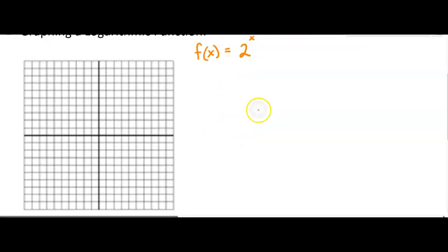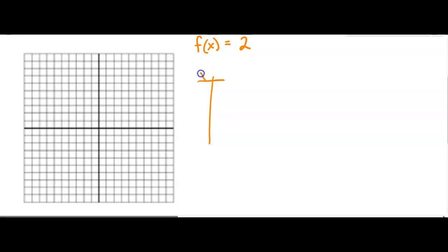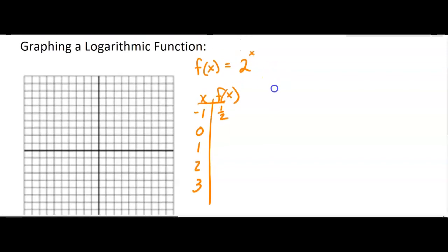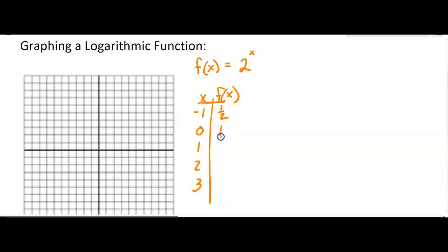Just a quick table of values here. We'll keep it fairly simple. So negative 1, 0, 1, 2, let's throw 3 in there. And so you get 1/2, sorry can't see the function, 1, 2, 4, and 8.